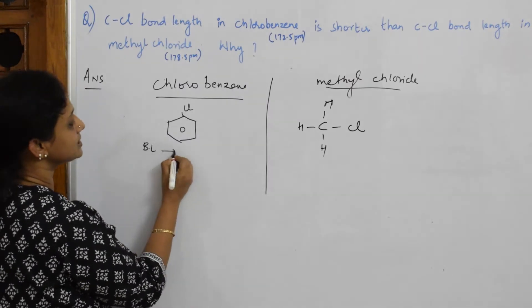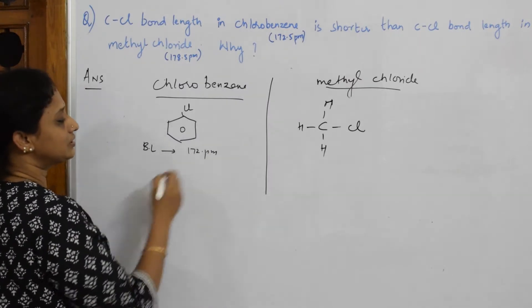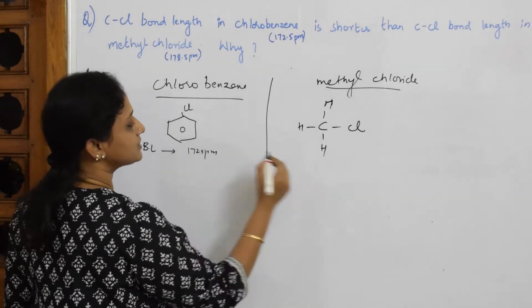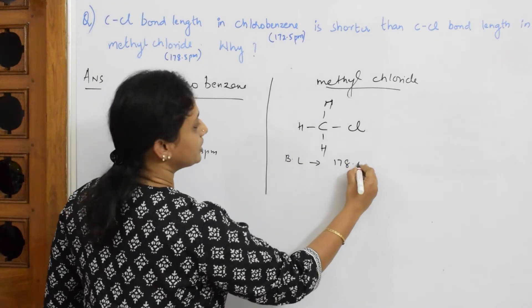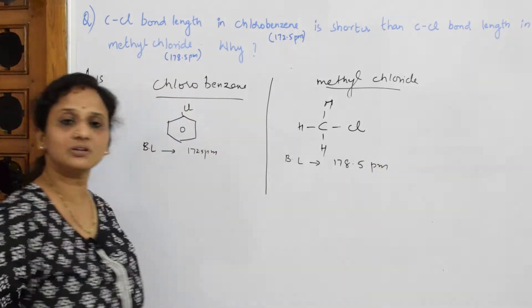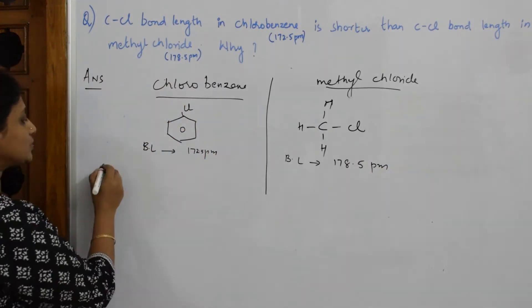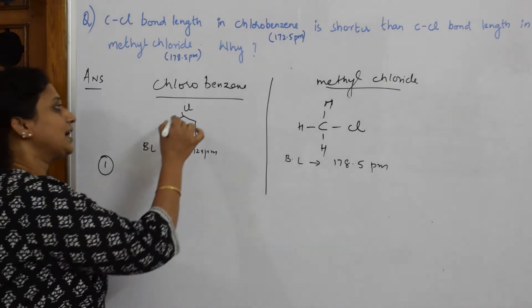Now a particular data is given to me, that is bond length. Bond length is 172 picometer given here and 178.5 picometer is given here. Now they want us to reason this question.